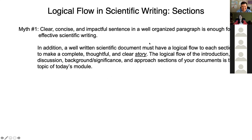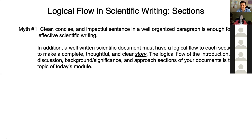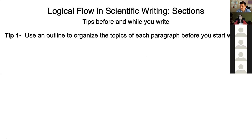I wanted to clear up a myth. The myth is: clear, concise, and impactful sentences and a well-organized paragraph is enough for effective scientific writing. The answer is no, because we're having a whole module on sections. It's really important to get your sections in logical flow because you want to tell a story. A well-written scientific document must have logical flow in each section to make a complete, thoughtful, and clear story. The logical flow of the introduction, discussion, background, and significance approach sections is what we're going to talk about.